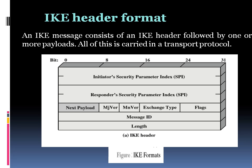Continuing the IKE header fields: Major Version and Minor Version are each 4 bits and indicate the version of IKE in use. Exchange Type is 8 bits and indicates the type of exchange. Flags is 8 bits and indicates specific options set for the IKE exchange. Message ID is 32 bits and is used to control retransmission of lost packets and matching of requests and responses. Finally, Length is 32 bits and indicates the total message length — that is, header plus all payloads.